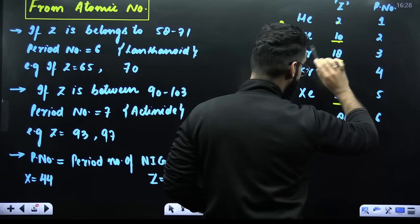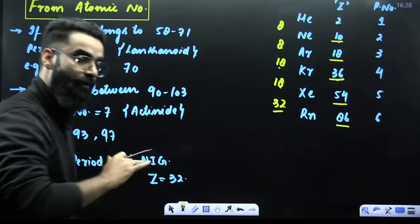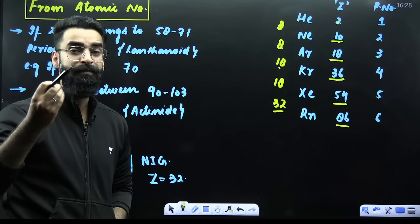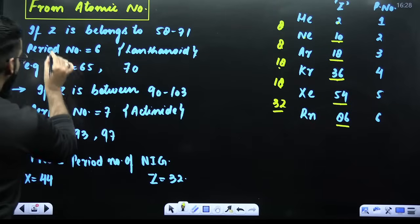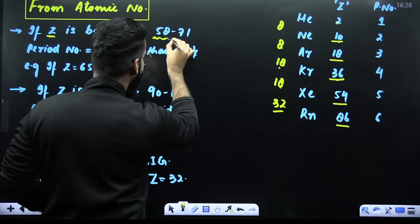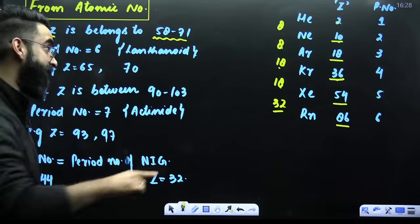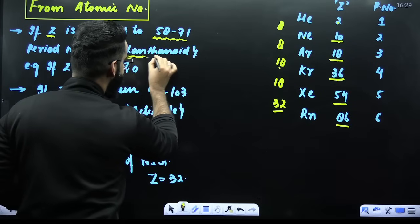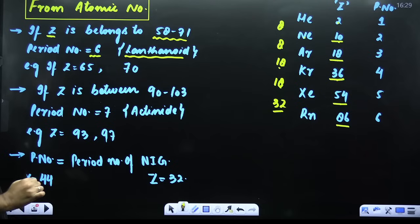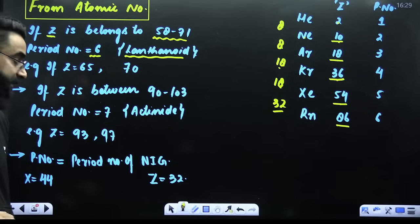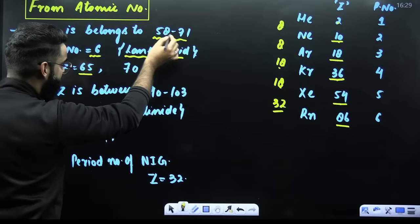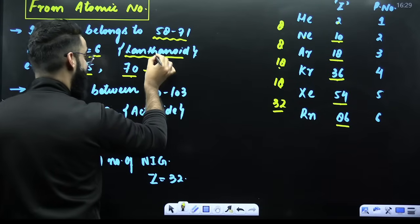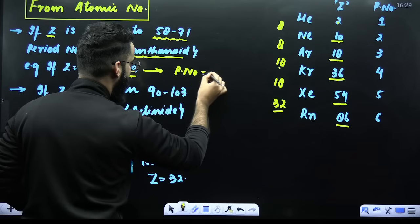Helium belongs to the 1st period, neon to the 2nd, argon to the 3rd, krypton to the 4th, xenon to the 5th, radon to the 6th period. Now, if the atomic number belongs to 58 to 71, it is an F block element — specifically the lanthanoids — and all lanthanoids belong to the 6th period. For example, atomic number 65 or 70: these are lanthanoids and their period number is 6.